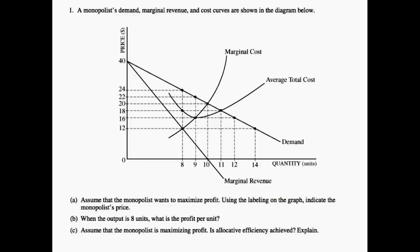Question number one states: a monopolist's demand, marginal revenue, and cost curves are shown in the diagram below. The first part of the question asks us to find the monopolist's price. What we know about a monopolist is that monopolists will set marginal revenue equal to marginal cost because they have market power, therefore they can set a price higher than the typical social optimum, which is price equals marginal cost. So let's go ahead and see where marginal revenue intersects marginal cost.